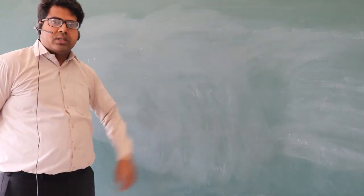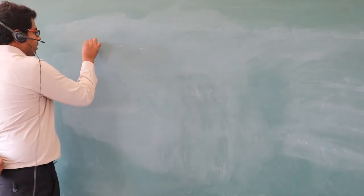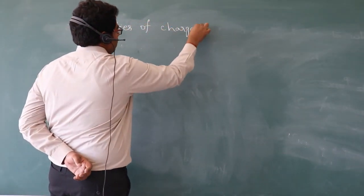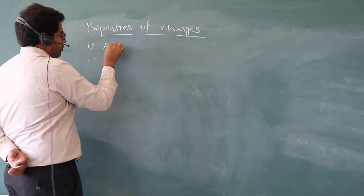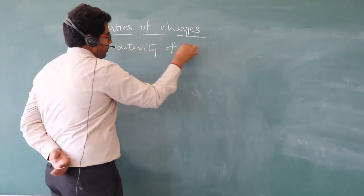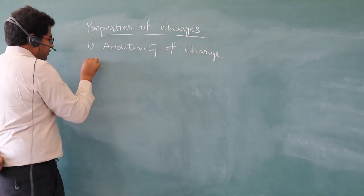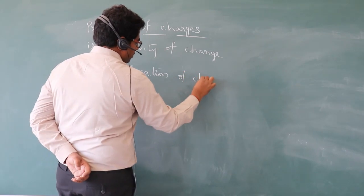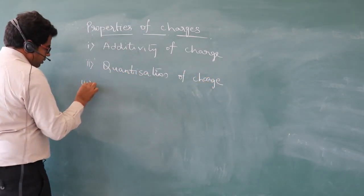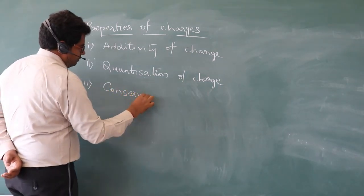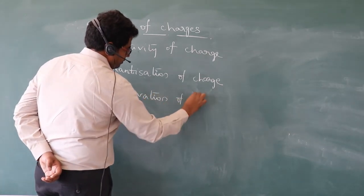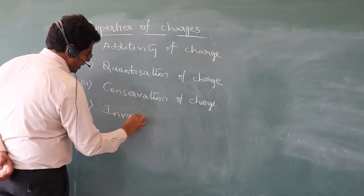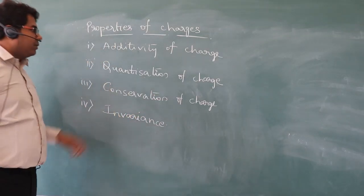Now we are going to discuss about properties of charges. There are mainly four properties of charges: first is additivity of charge, second is quantization of charge, third is conservation of charge, and fourth is charge invariance.